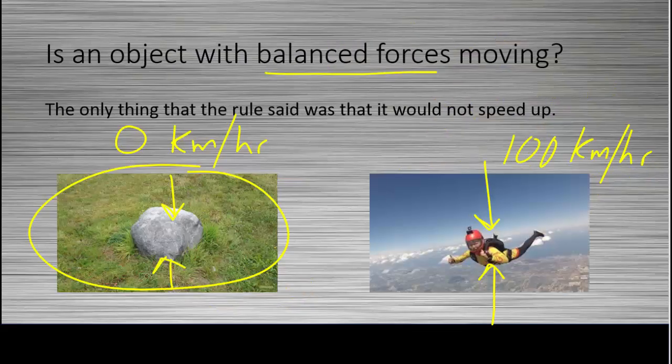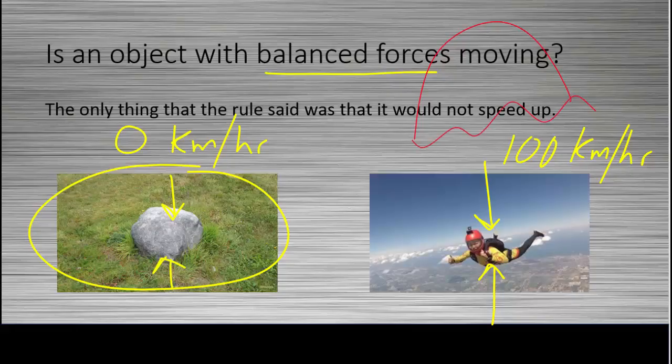And he will keep going 100 kilometers per hour until he changes those forces. And if he puts a parachute out, now you're going to increase the amount of air resistance because of hitting the parachute. And now we have an unbalanced force. He's going to change his speed. He's going to slow down.